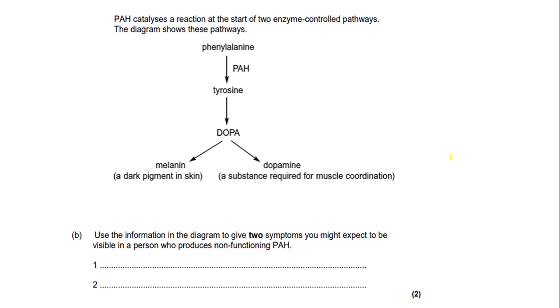PAH catalyses a reaction at the start of two enzyme-controlled pathways. The diagram shows the amino acid phenylalanine being converted to tyrosine by PAH. Tyrosine is then converted to DOPA, which can go on to produce either melanin — a dark pigmented skin component — or dopamine, which is required for muscle coordination. The question asks: use the information in the diagram to give two symptoms you might expect in a person who produces non-functioning PAH. If someone has a non-functioning PAH, phenylalanine can't be converted to tyrosine, so DOPA cannot be produced and therefore melanin and dopamine can't be produced.